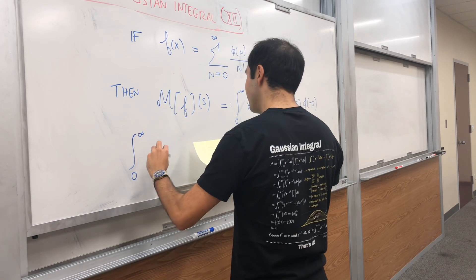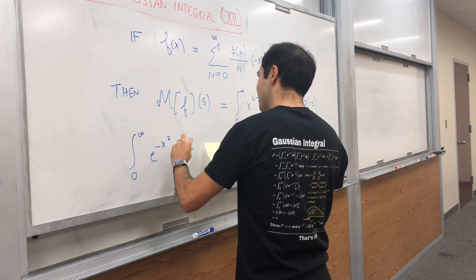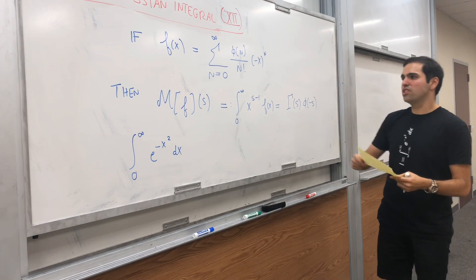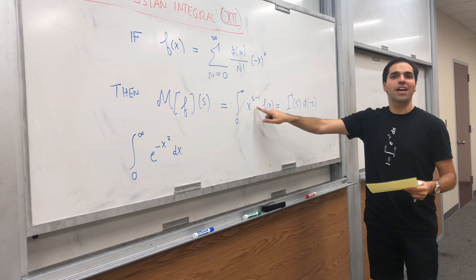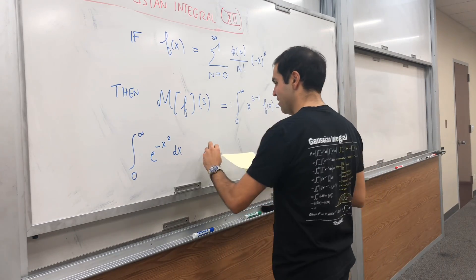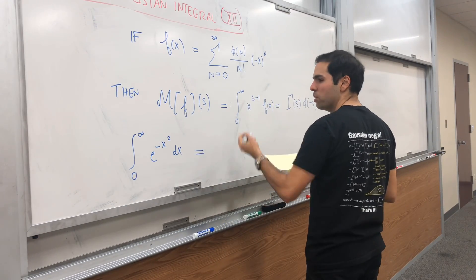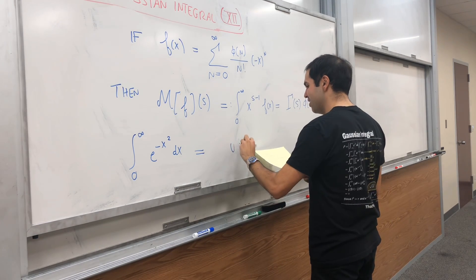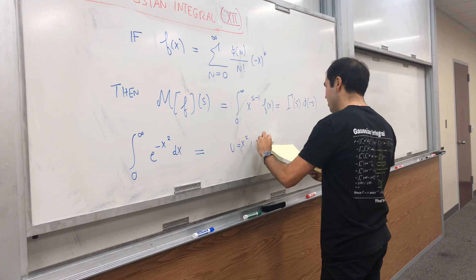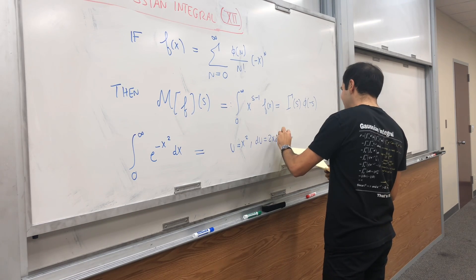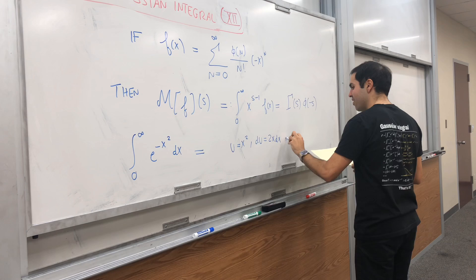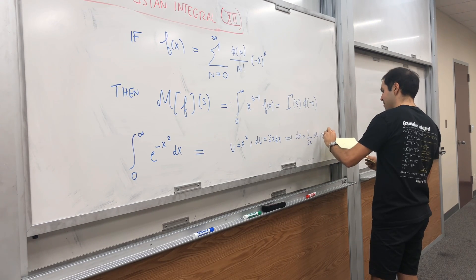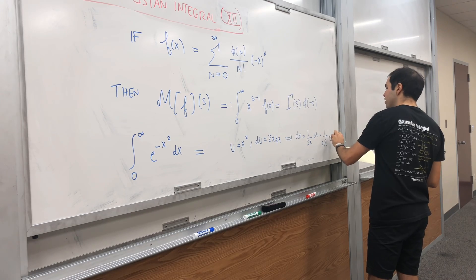Take the integral from 0 to infinity of e to the minus x squared dx, the Gaussian integral. Let's transform it into the form x to the s minus 1. Use the u substitution u equals x squared, du equals 2x dx, therefore dx is 1 over 2x du, which becomes 1 over 2 square root of u du.